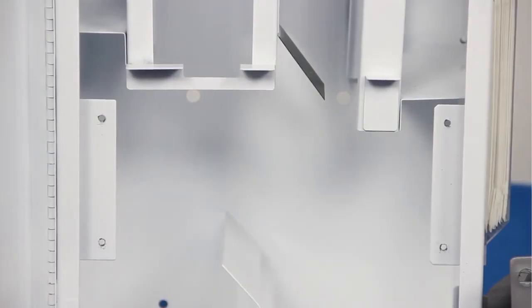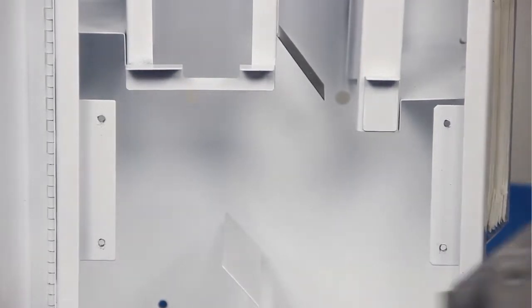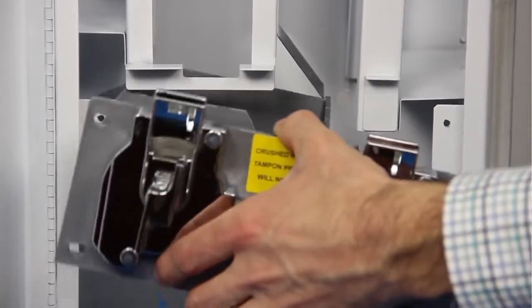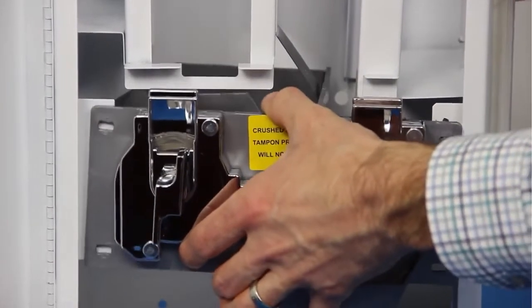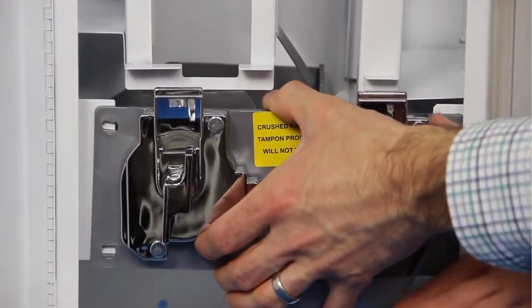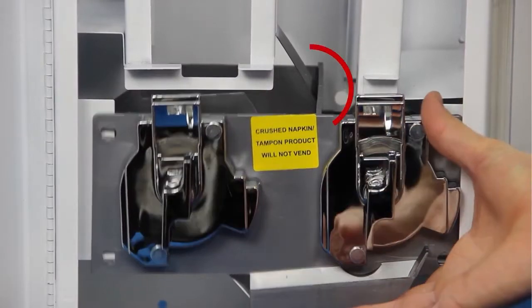Now you can place the vending console back into the outer case. Note the position of the diagonal metal divider. This is necessary for proper machine function.